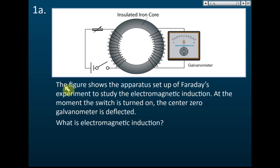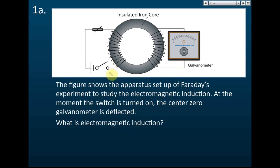Question 1. The figure shows the apparatus setup of Faraday's experiment to study electromagnetic induction. At the moment the switch is turned on — this is direct current — the center zero galvanometer is deflected either to the left or to the right. After that, it will go back to center. That is the introduction of the question.